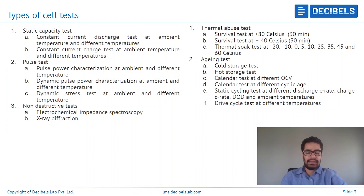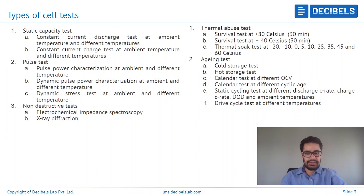Coming to a slightly more advanced form of testing called the pulse test — we have pulse power characterization test, which is basically subjecting the cell to different pulses of current. This can be performed at ambient temperature (25 degrees Celsius) and also at different temperatures. As per ISO, testing is done at minus 20, minus 10, 0, 15, 25, 35, 45, and up to 60 degrees Celsius. Then there is dynamic pulse characterization, where the rate or nature of the pulses is changed — the current supplied per pulse is varied. This can be further modified into what is called a dynamic stress test, where not only the pulse staging but also the duration and magnitude of the pulses is changed. This can be performed both at ambient and at different ambient temperatures.